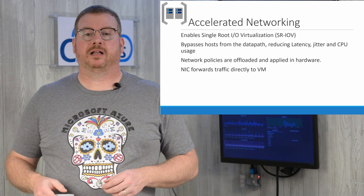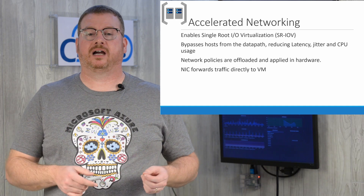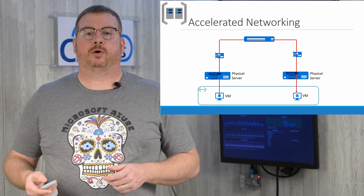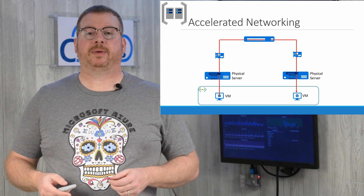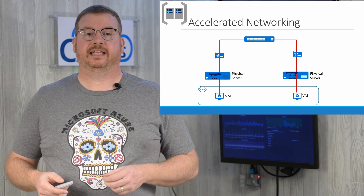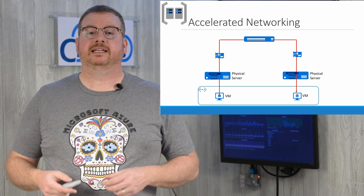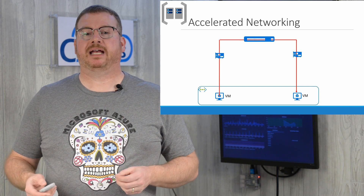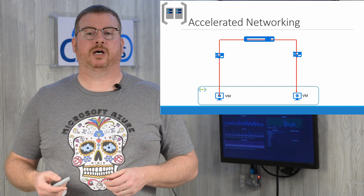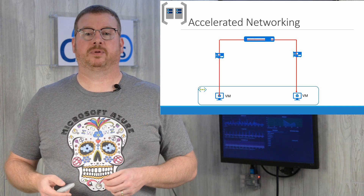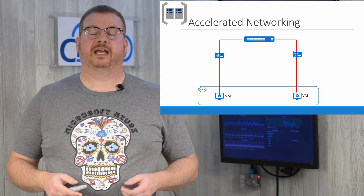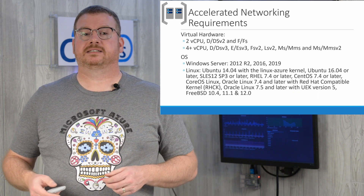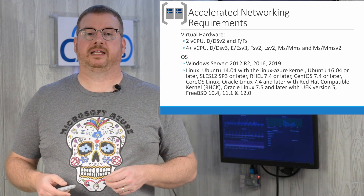Accelerated networking enables something called single root I/O virtualization. The data path bypasses the host to reduce latency, jitter, and CPU load. Network policies are offloaded to the hardware, and traffic takes a more direct path between VMs. Without accelerated networking, traffic passes from the VM to the virtual switch, out the server NIC, and into the switching environment, then back through the physical NIC and virtual switch into the destination VM. With accelerated networking enabled, traffic arrives at the VM's NIC bypassing the host and virtual switch, and network policies are offloaded to the hardware. For best results, enable it on two or more VMs connected to the same VNet — note that accelerated networking is not supported on all VM sizes and OS types.